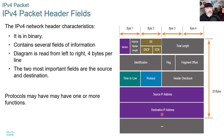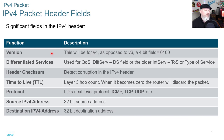Significant fields in the V4 header: the version field will contain a 4, as opposed to a 6 for IPv6 — it's a 4-bit field with value 0100. Differentiated services is used for quality of service, also known as DiffServ, DS field, IntServ, TOS, or type of service. The header checksum is used to detect corruption in the V4 header. The time to live is the Layer 3 hop count, indicating how many hops the packet has made. When TTL reaches 0, the router discards the packet.